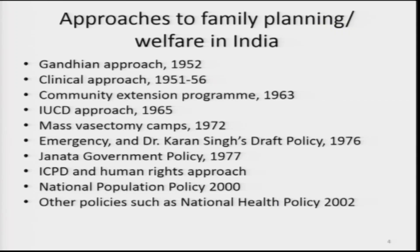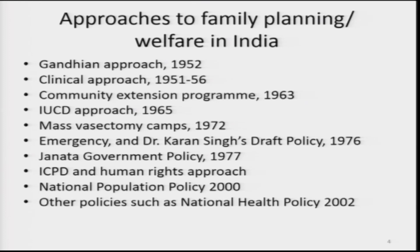The approach obviously failed. In the period 1951 to 1956, a clinical approach was adopted and a large number of clinics were opened in different hospitals, expecting that couples — especially women — would come to clinics and avail services and consultancy. When this clinical approach also did not work and censuses showed a rising growth rate of population, the state thought that people must be made aware and motivated to limit family size. A number of change agents were appointed at the village, block development, and panchayat level, and this is how the community extension program started.